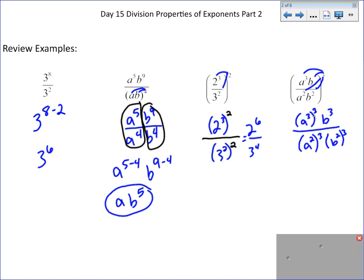We use our power of power property to be able to multiply those. You get a to the 9th, b to the 3rd over a to the 6th, because 2 times 3 is 6, b to the 6th.